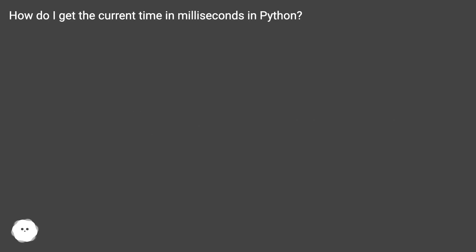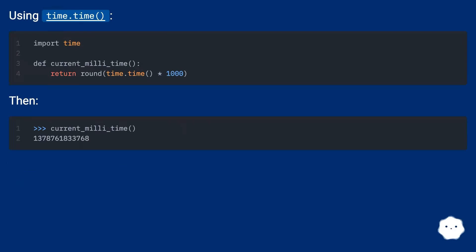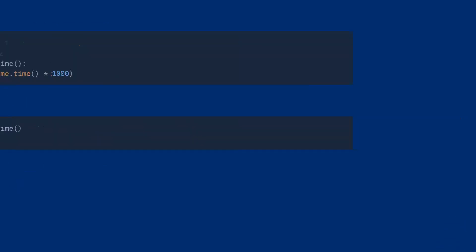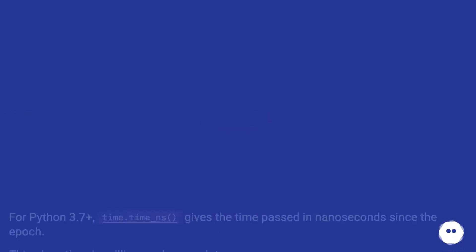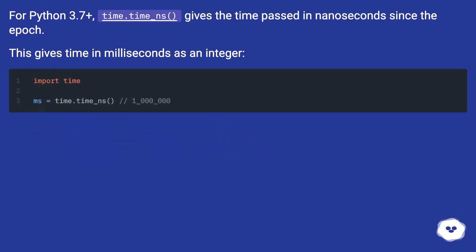How do I get the current time in milliseconds in Python? Using time.time. For Python 3.7 and above, time.time_ns gives the time passed in nanoseconds since the epoch, which gives time in milliseconds as an integer.